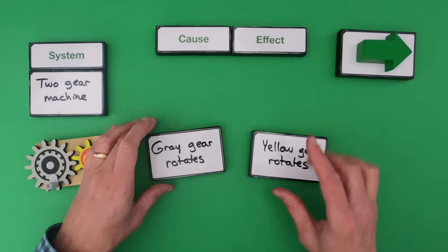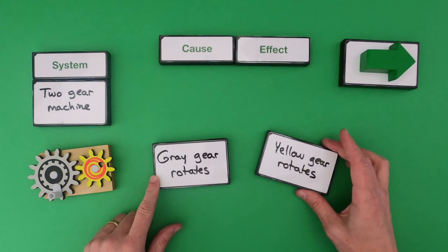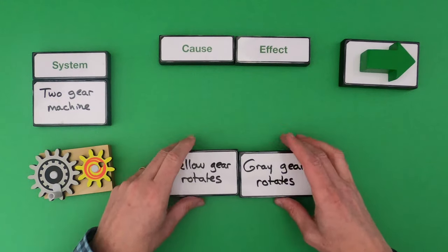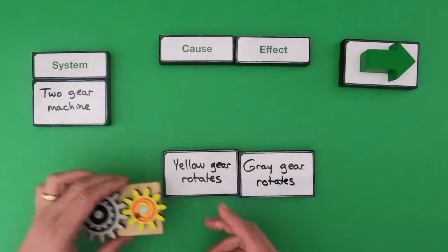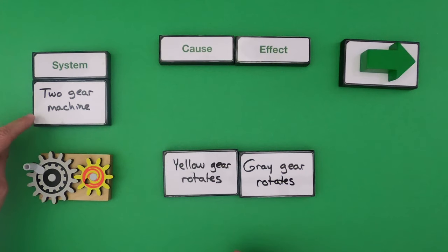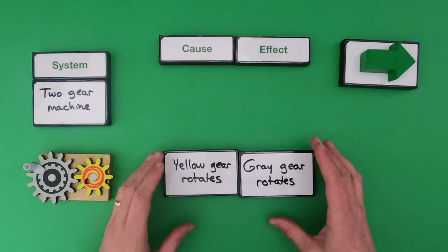So the two events that I've written down are the gray gear rotating and then the yellow gear rotating. Now if you're observing carefully you also notice that I'm turning the gray gear. So that's another event. But since we defined the system just as the two-gear machine, we're just going to focus on these two events.